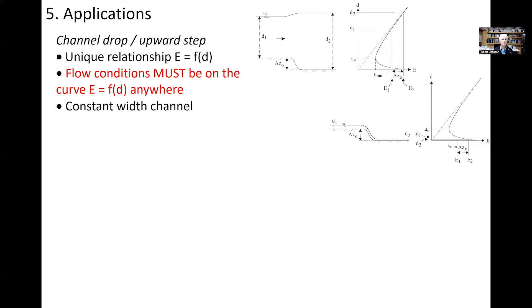A first application could be a change in bed elevation with constant channel width — for example a downward step or drop. Using the graphical relationship between specific energy and flow depth, we see two different patterns: for subcritical inflow, a drop in bed elevation corresponds to an increase in specific energy, and the downstream water depth would also be subcritical. For supercritical inflow, an increase in specific energy leads to a decrease in water depth, so d₂ is less than d₁.